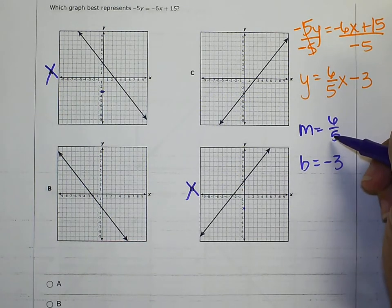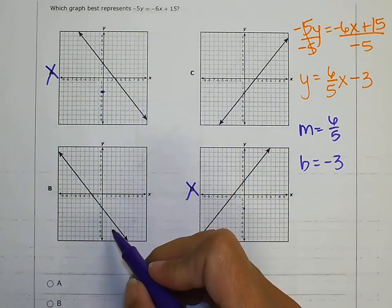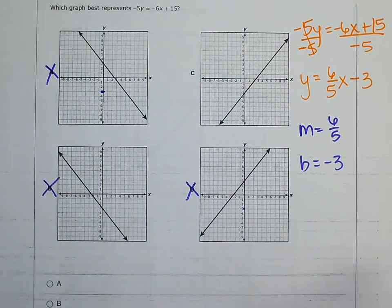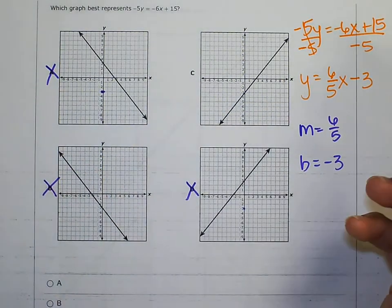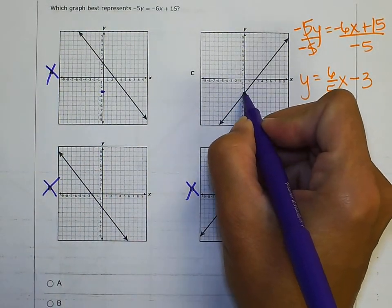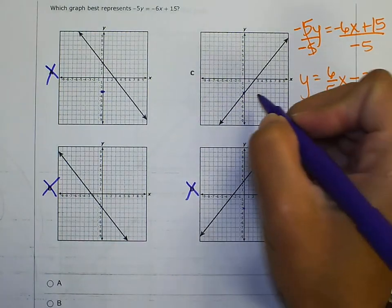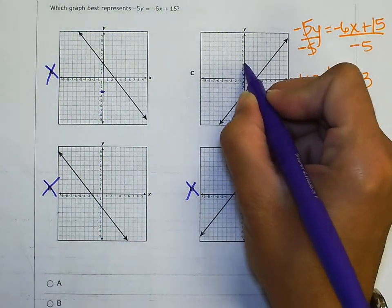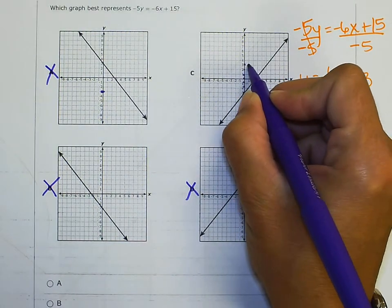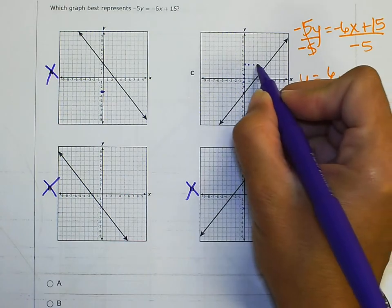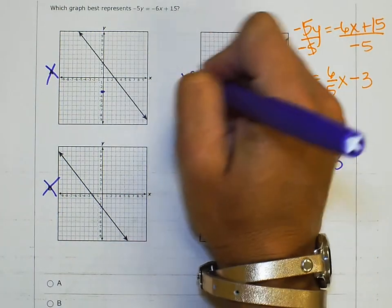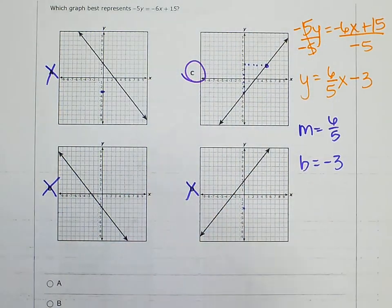My slope is positive, so I eliminate the option with a negative slope. Double-checking: starting at −3, I rise 1, 2, 3, 4, 5, 6 and run 1, 2, 3, 4, 5, and I'm back on the line. So C is the correct answer.